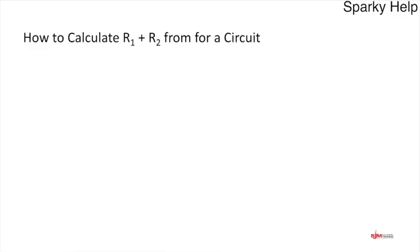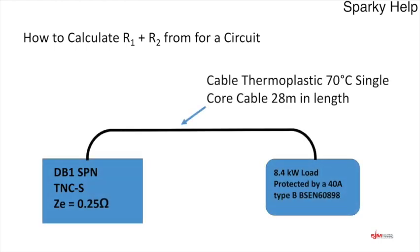First, we need to work out what R1 and R2 is. R1 is the line conductor and R2 is the CPC of a particular circuit. We'll take an example from a previous video on cable calculations — Easy Guide 2 — where we've already calculated the cable for this example.